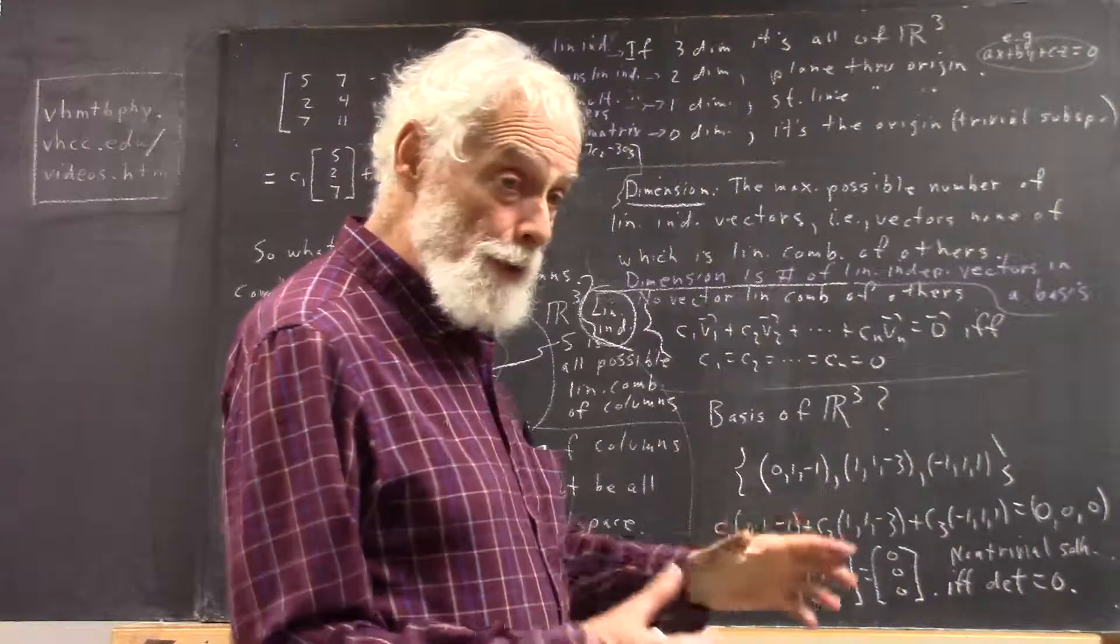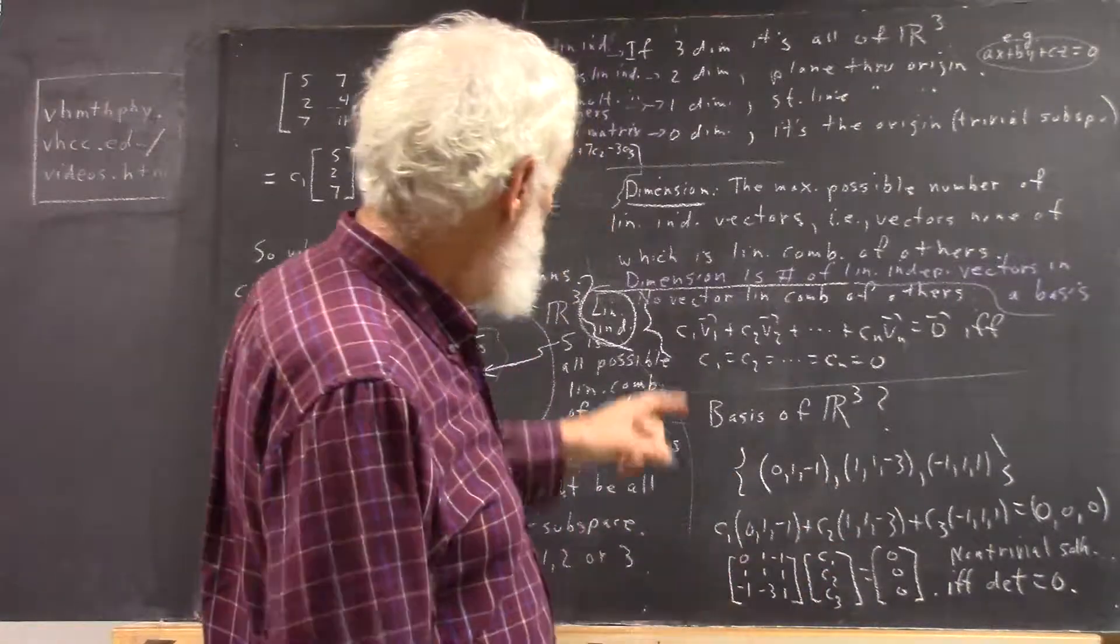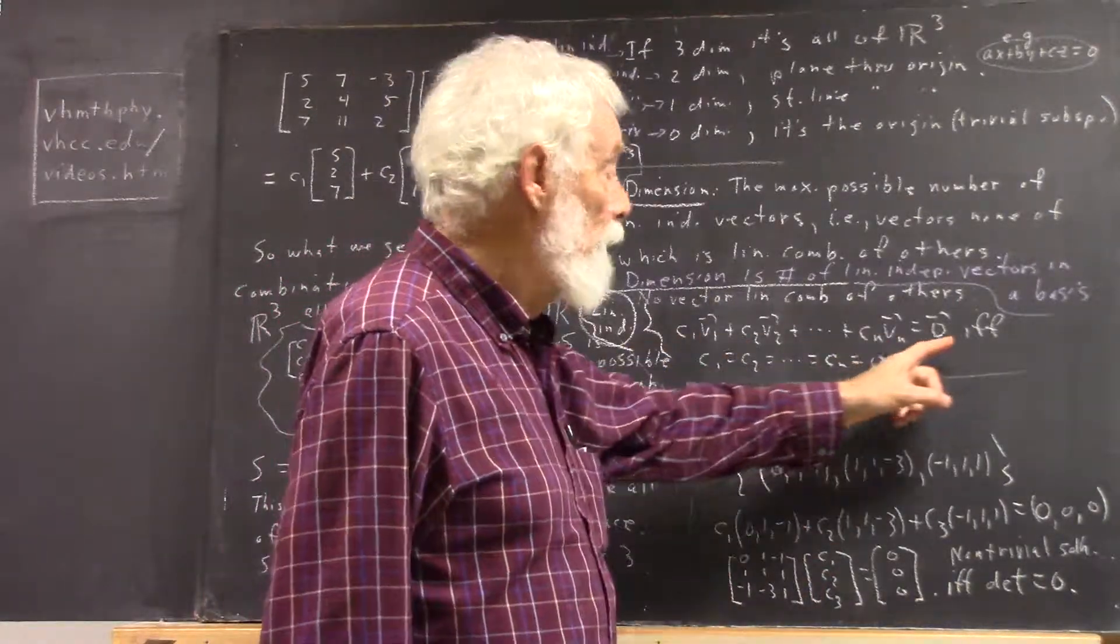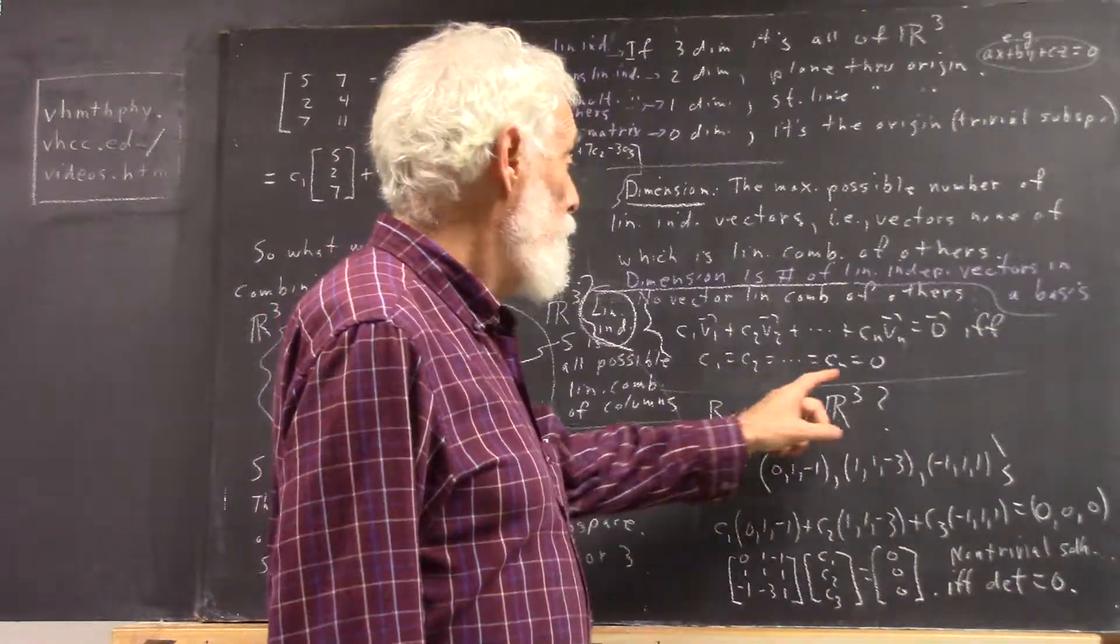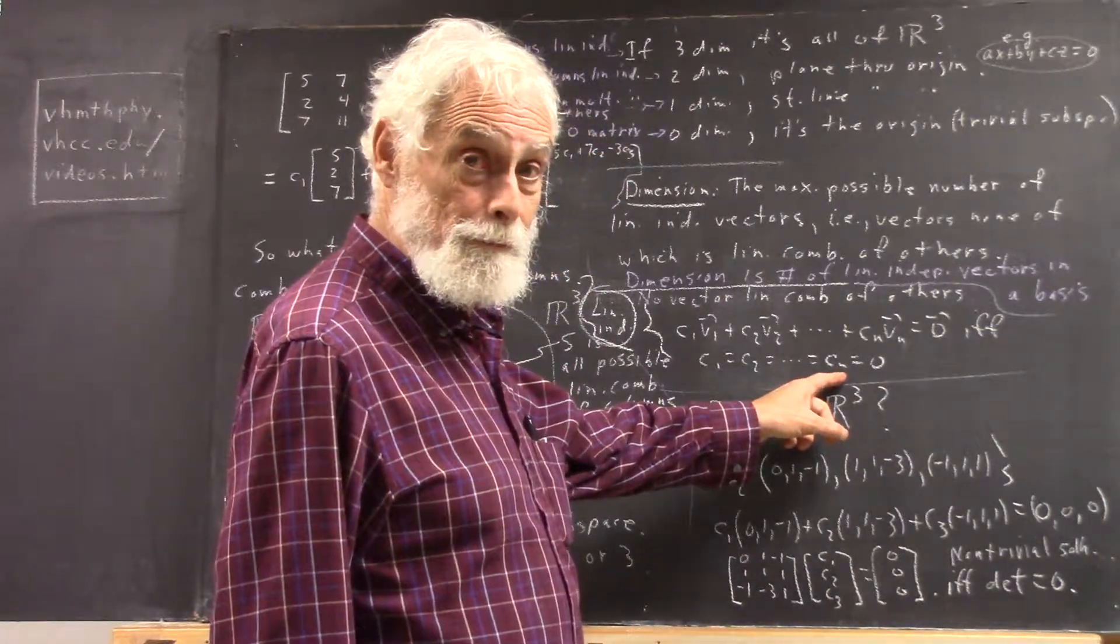Okay, if the set is linearly independent, then the only way a linear combination can add up to 0 is if all the coefficients are 0.